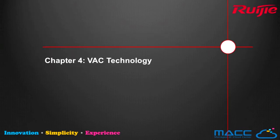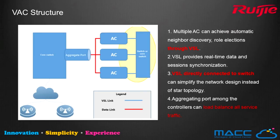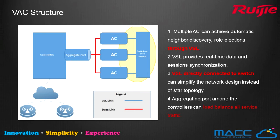Looking at the VAC technology topology, there are four major components: AP, core switch, hardware controller, and an optional switch. The controller performs neighbor discovery and vote election through physical VSL on each virtual member. The VSL provides real-time data synchronization to increase reliability. VAC technology requires a star-shaped topology for VSL. If there are only two controllers, the VSL can be directly connected without an extra switch. But with three or more controllers, this requires additional cables and ports, which is why we recommend using a core switch or extra switch to provide VSL Layer 2 forwarding.